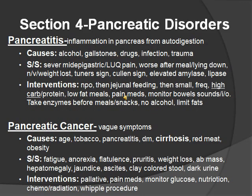Pancreatic disorder: the pancreas helps in digestion and regulates glucose. Pancreatitis is inflammation of the pancreas from autodigestion. Causes: alcohol, gallstones, drugs, infections, and trauma. Signs and symptoms: mid-epigastric and left upper quadrant pain — worse after meals and when lying down. Nausea, vomiting, and weight loss. Turner's sign — red or blue discoloration of the flank. Cullen's sign — blue discoloration around the umbilicus. Elevated amylase and lipase. Interventions: NPO first, then jejunal feeding, then small frequent high-calorie, low-fat meals. Pain medication, monitor bowel sounds, I&O, take enzymes before meals and snacks, no alcohol, and limit fats.